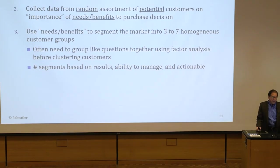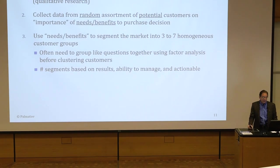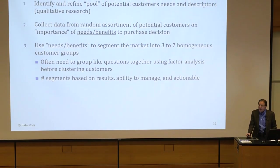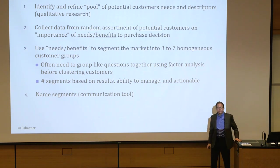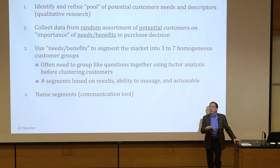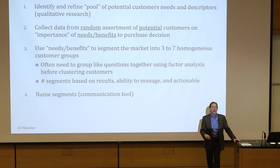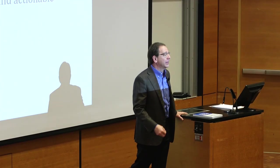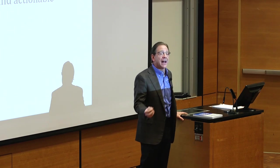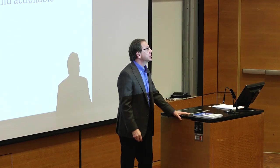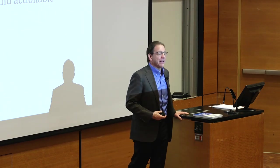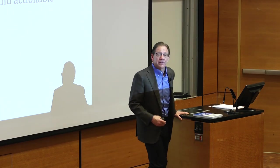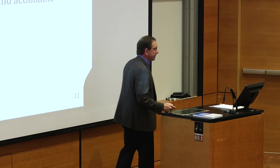After we determine the number of segments based on the results and ability to manage, we name them. Why do we name the segments? We name them so we can keep track of them internally. Be careful, because sometimes it leaks out to the public, so don't call them any derogatory name — 'cheapskates' or 'penny pinchers' are ones that actual companies have used and got caught on. 'Value conscious segment' is a more politically correct way to refer to them.